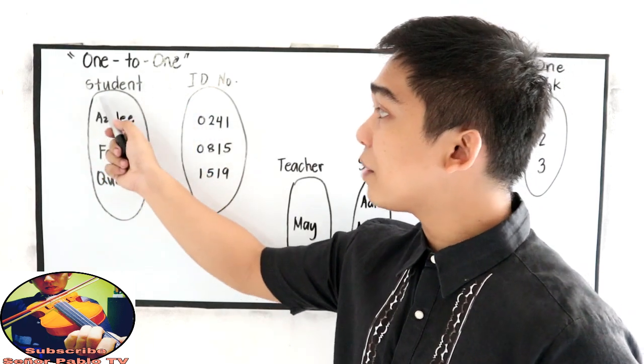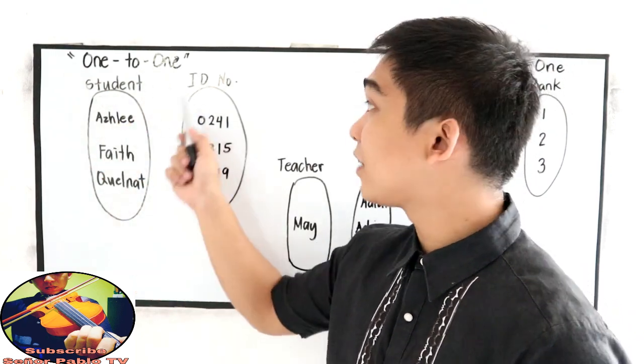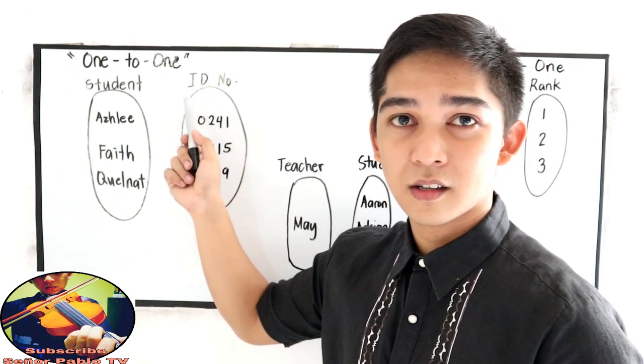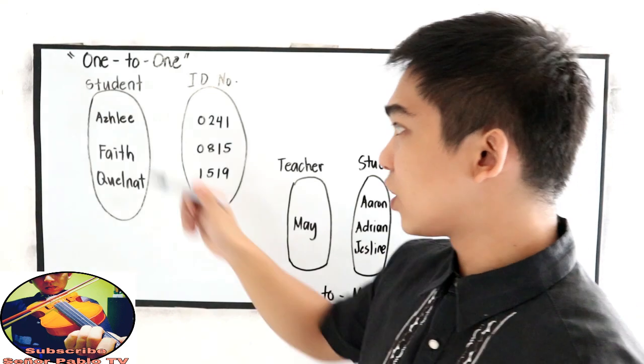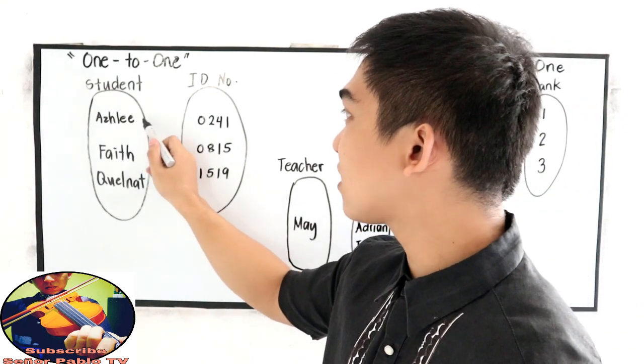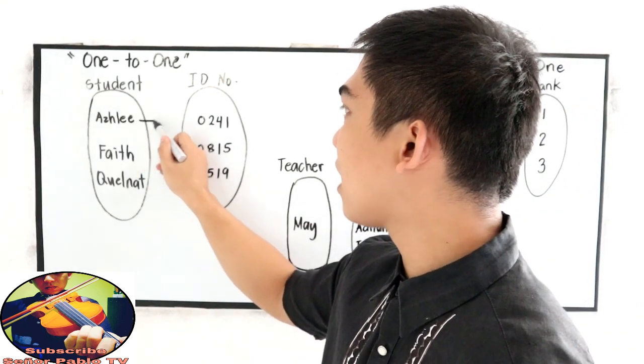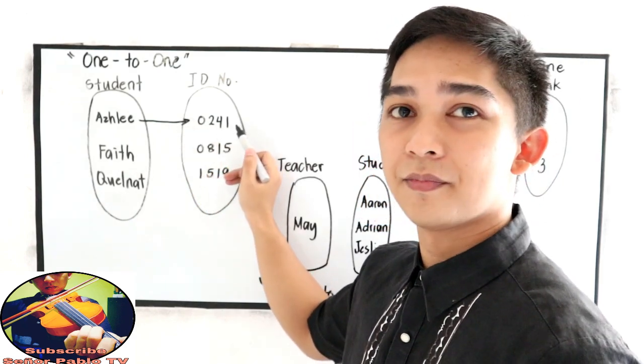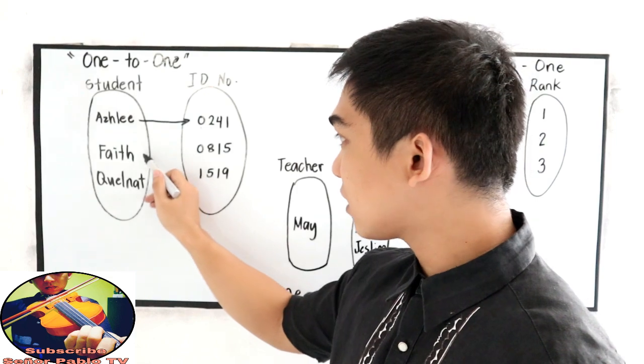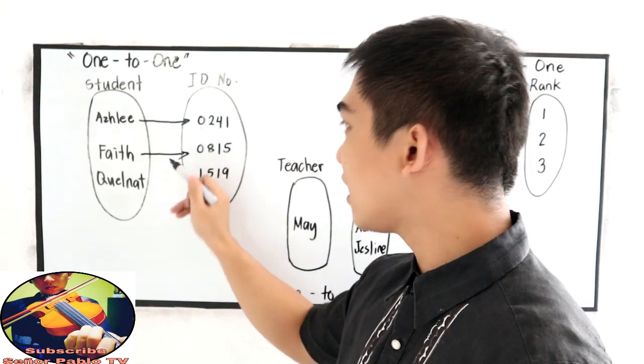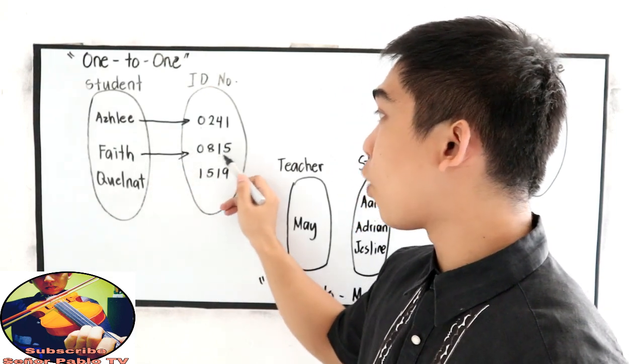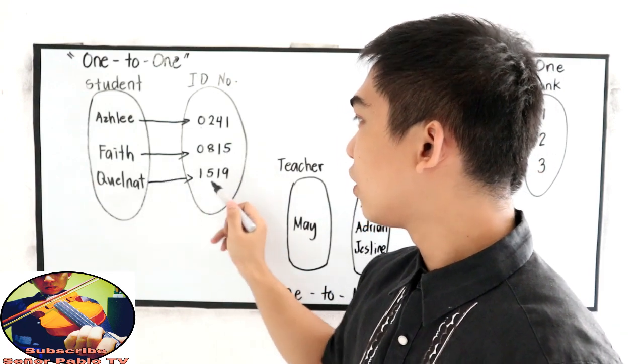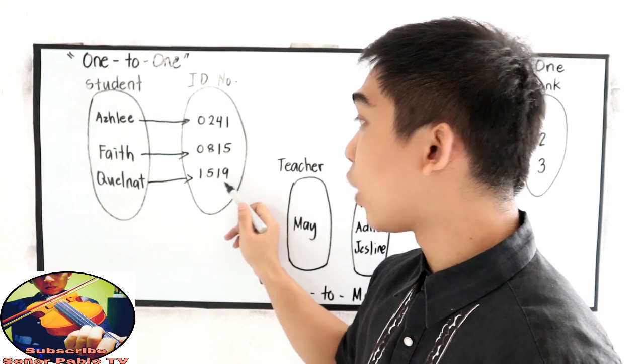Let's say we have a name of a student and their ID numbers. For Ashley, she has an ID number of 0241. For Faith, ID number of 0815. And for Kelna, we have 1519.